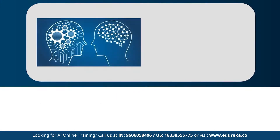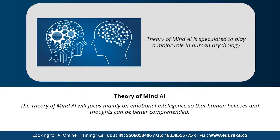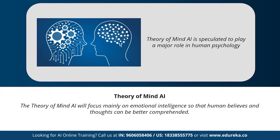Next we have theory of mind artificial intelligence. Theory of mind AI is a more advanced type that is speculated to play a very important role in psychology. This type of AI will mainly focus on emotional intelligence so that human beliefs and thoughts can be better comprehended. Theory of mind AI has not been fully developed yet, but rigorous research is happening in this area.